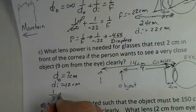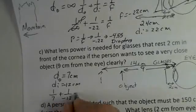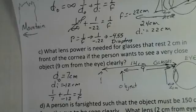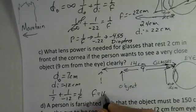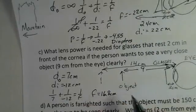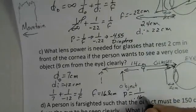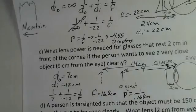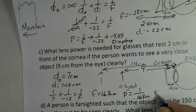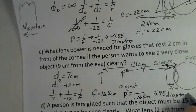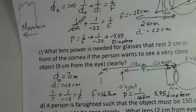So doing our calculation here, 1 over DO plus 1 over DI equals 1 over F. You should pause and do this calculation. I came up with 16.8 centimeters for the focal length. The power would be 1 over 0.168 meters. And that power is 5.95 diopters. That's not the focal length. That's the power. 5.95 diopters.